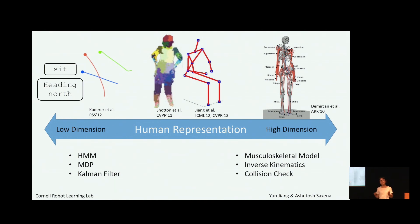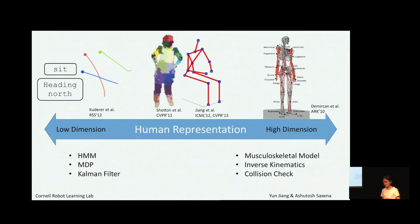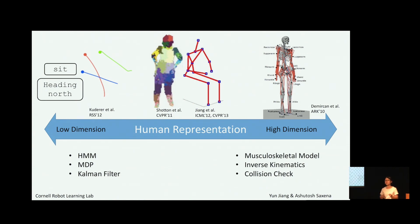In many situations we want both low-dimensional and high-dimensional representations. In this work, we consider the task of anticipating human activity: we want the low-dimensional representation to quickly infer the future state of humans, while at the same time having the high-dimensional representation to generate realistic human motions. Motivated by these two different representations, we propose a model that combines the best of both.